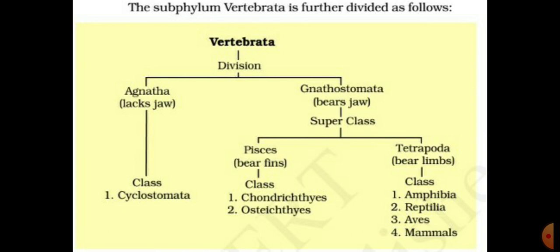Vertebrata is also known as Craniata because in these animals the cranium is present — the brain box and skull are present, and the brain is completely enclosed inside the brain box. In Vertebrata, jaws and paired appendages are also present. Therefore it is known as Craniata.